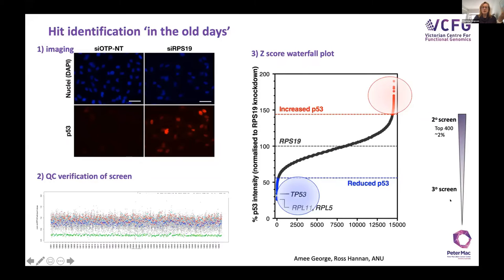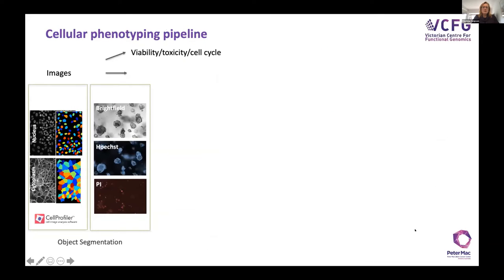From there we do our tertiary screen, work out relationships, go through the interactome networks and published data, and try to find anything related to hone our hit list down. It was a cumbersome way of doing things. Now life is much better with cellular phenotyping.